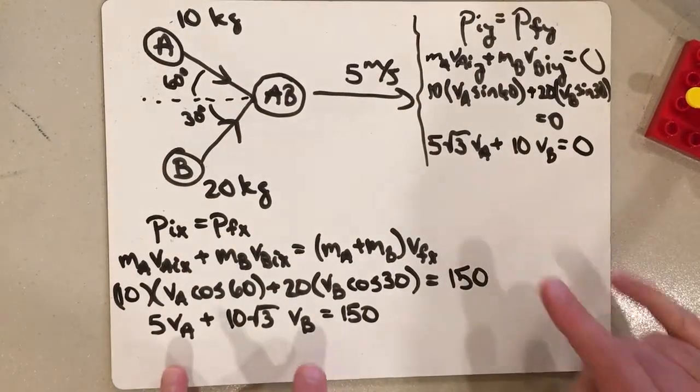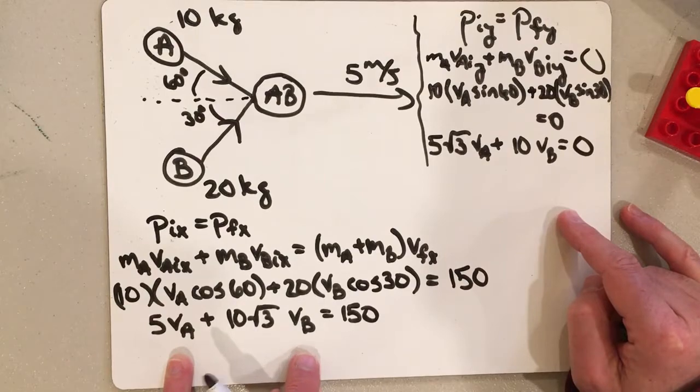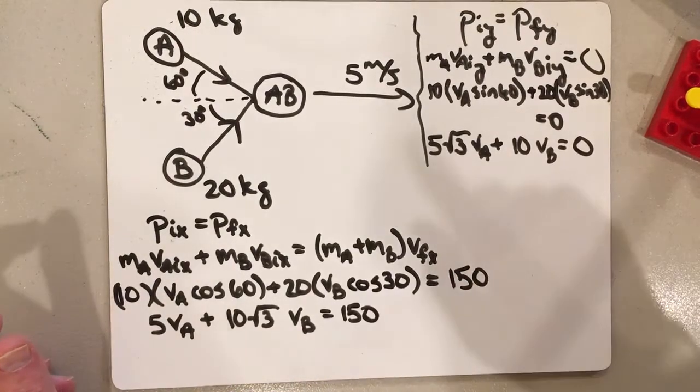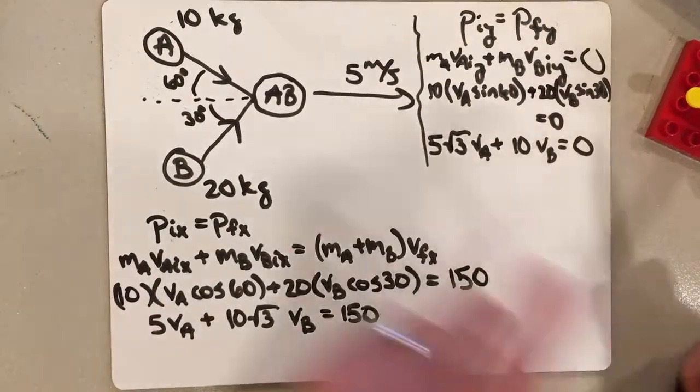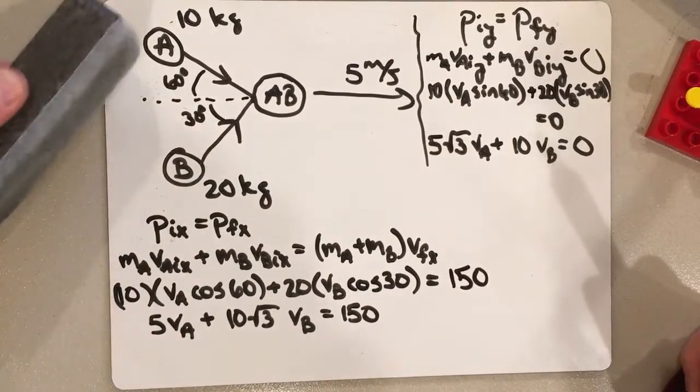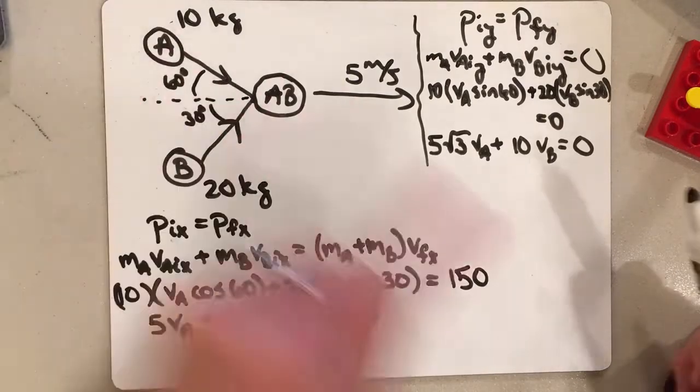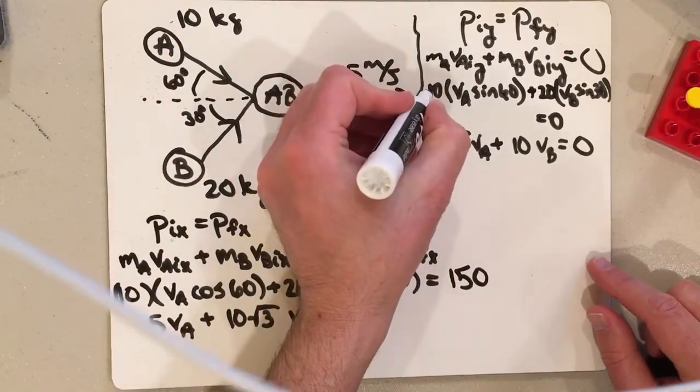And what I have here are two equations with two unknowns. Oh, I have made a small mistake here. Let me go ahead and fix that. My mistake is I forgot to recognize that the Y momentum, the initial Y momentum of A, is going down, so there should be a minus sign here.